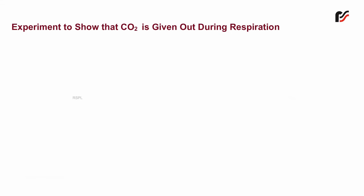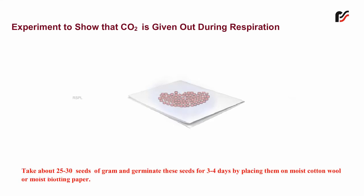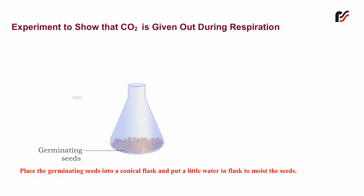To show that carbon dioxide is given out during respiration, take about 25 to 30 seeds of gram and germinate these seeds for three to four days by placing them on moist cotton wool or moist blotting paper. Place the germinating seeds into a conical flask and put a little water in the flask to moisten the seeds.